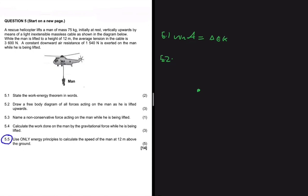Let's read the question statement so we can see what is really happening. A rescue helicopter lifts a man of mass 75 kg vertically upwards by means of a light inextensible massless cable as shown in the diagram below. The man is being lifted up by a cable, so we're supposed to have a tension force here. While the man is being lifted to a height of 12 meters, the average tension in the cable is 3,600 newtons.